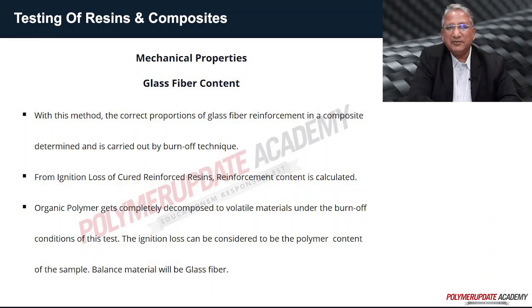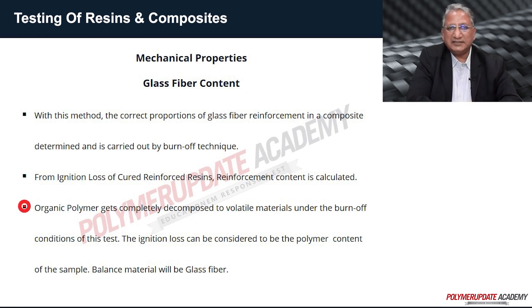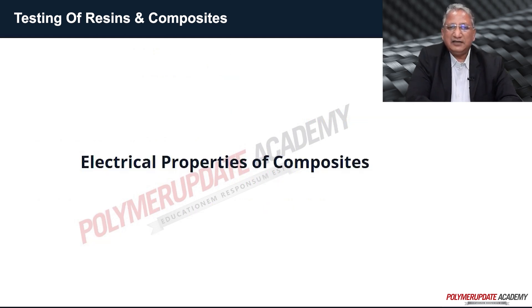The next property to be determined is glass fiber content in the composite. Though it is not a mechanical property, it is important to find out the content of glass reinforcement. Using the burn-off technique, the correct proportion of glass fiber reinforcement in a composite is determined. From the ignition loss of cured reinforced resin, the reinforcement content is calculated. The organic polymer gets completely decomposed to volatile material under burn-off conditions. The ignition loss is considered to be the polymer content, and the remaining material is considered as glass fiber.